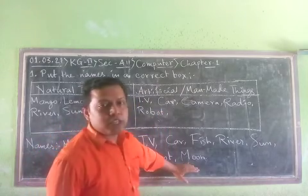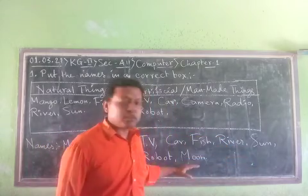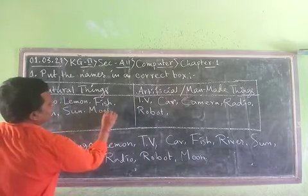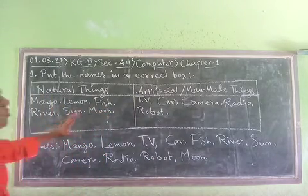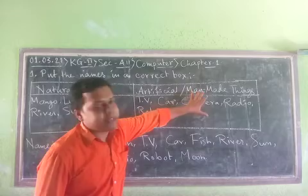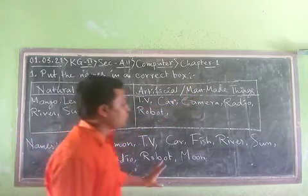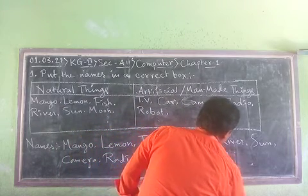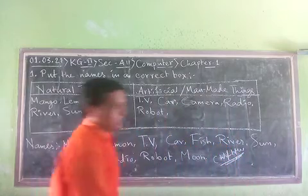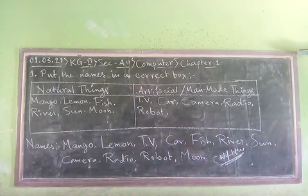Then comes moon. Moon is a natural thing — just like the sun is a natural thing, moon is also a natural thing. So we write moon in the natural things box. In this way we have separated all the names into the natural things box and the artificial or man-made things box. This is for today for all KG students. This is your classwork and homework. Namaskar students.